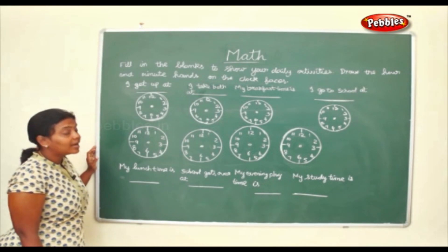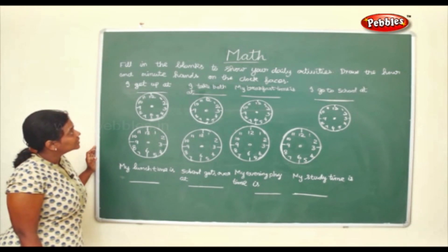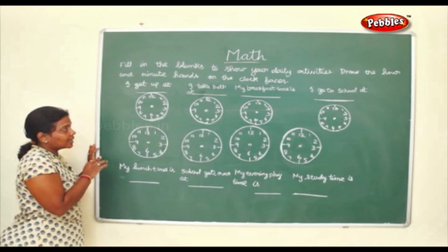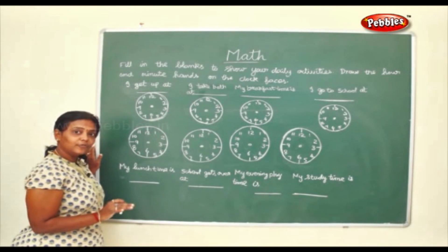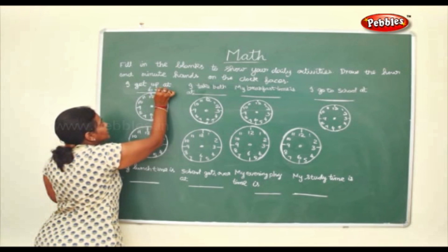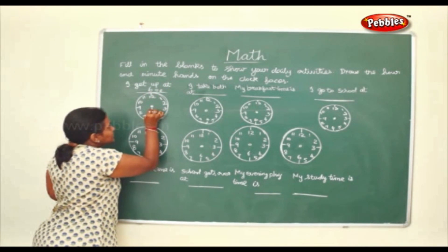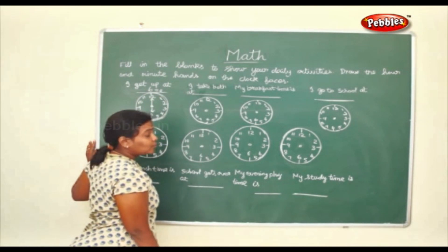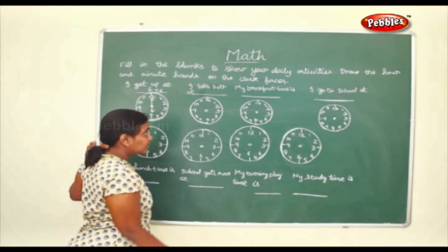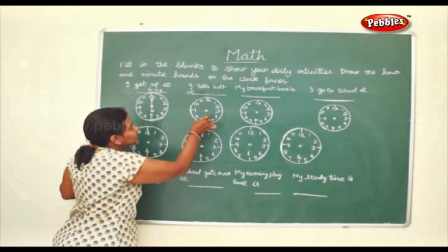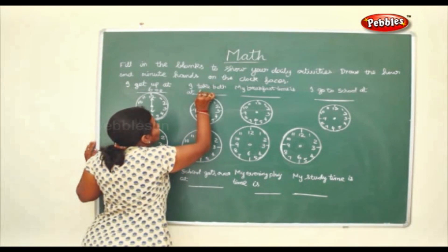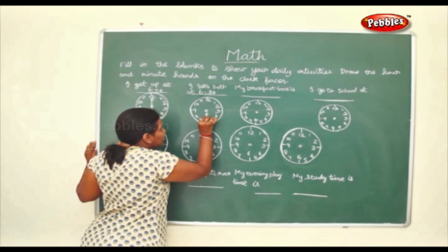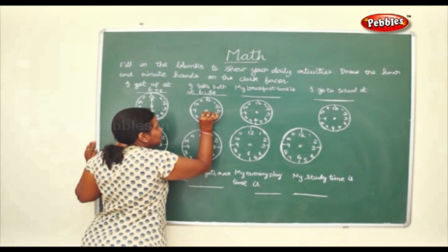Now we shall fill in the blanks to show our daily activities and draw the hour and minute hands on the clock faces. What time do you get up? Most get up at 6 o'clock, so we write 6 — small hand goes here and the bigger hand at 12. What time do you take a bath? After waking up you take a bath at say 6:30, so we write 6:30, with the small hand and big hand positioned accordingly.